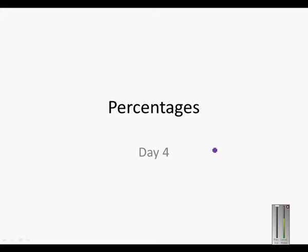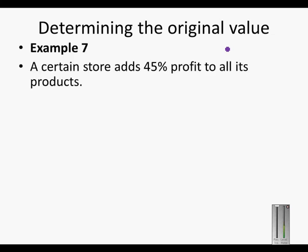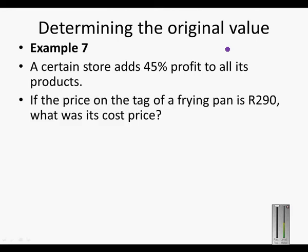Percentages, Day 4: Determining the original value. A certain store adds 45% profit to all its products. If the price on the tag of a frying pan is 290 rand, what was its cost price?